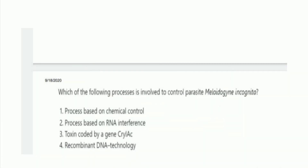Next question: which of the following processes is involved to control the parasite Meloidogyne incognita? The options are: process based on chemical control, process based on RNA interference, and toxin coded by a gene.